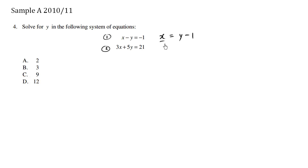Now that we have the value of x, we could simply look at equation number two and plug in that x value. 3x becomes 3y minus one plus 5y is equals to 21.